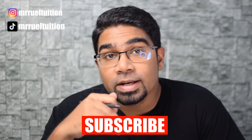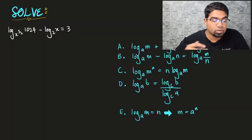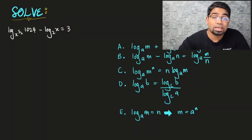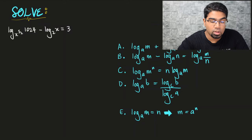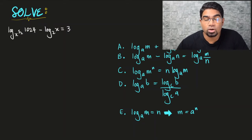Now let's get into the question. We have log base x to the power 5 over 2 of 1024, minus log₂x, equals 3. And we are required to solve for x.